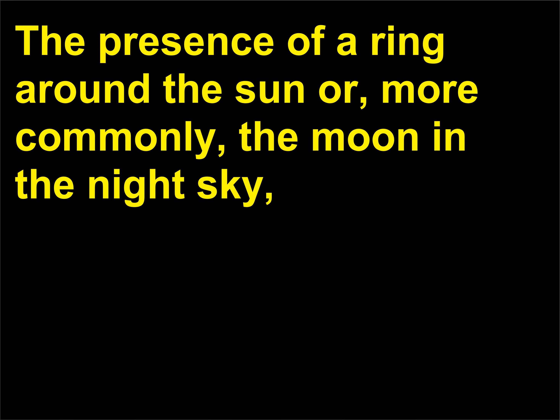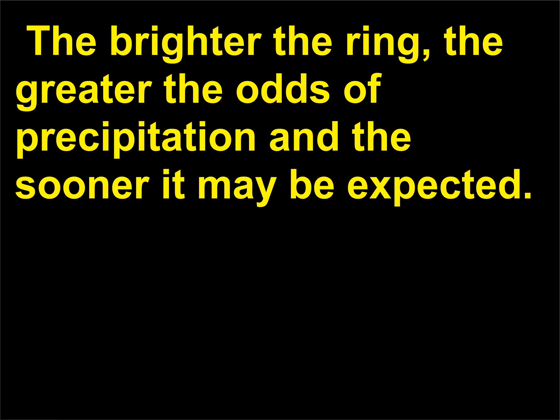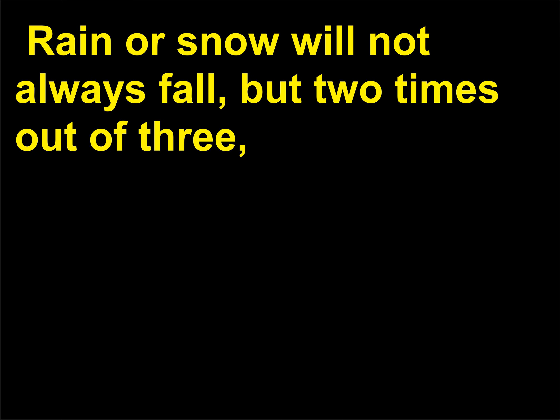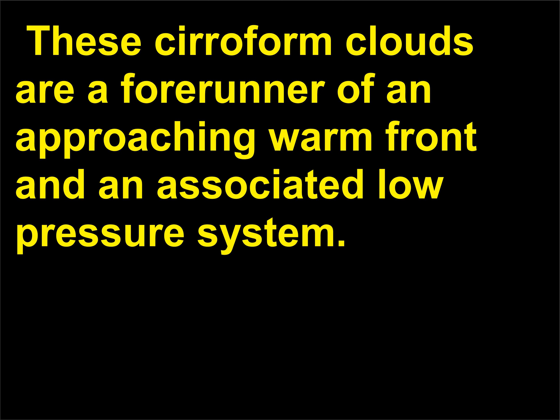The presence of a ring around the sun or, more commonly, the moon in the night sky indicates very high ice crystals composing cirrostratus clouds. The brighter the ring, the greater the odds of precipitation and the sooner it may be expected. Rain or snow will not always fall, but two times out of three, precipitation will start to fall within 12 to 18 hours. These cirroform clouds are a forerunner of an approaching warm front and an associated low-pressure system.